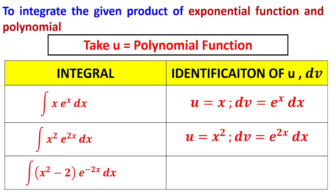If the integral involves (x² − 2)·e^(−2x), the polynomial is (x² − 2), which should be taken as u, and dv should be taken as e^(−2x) dx.